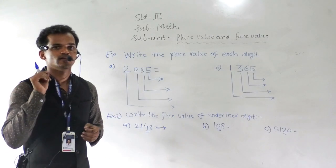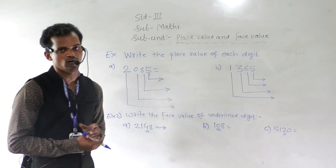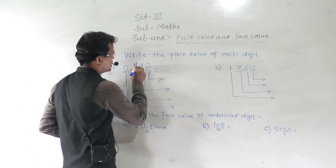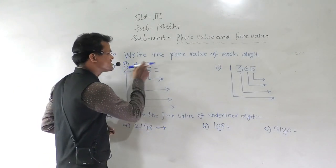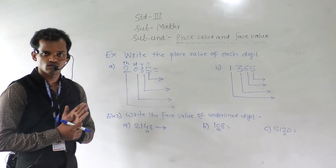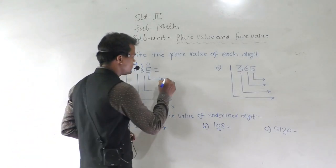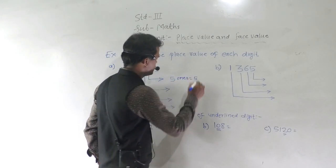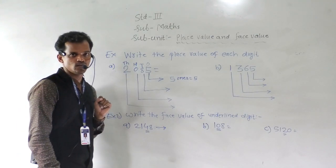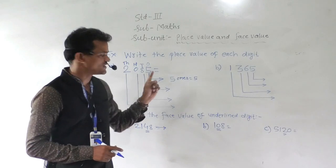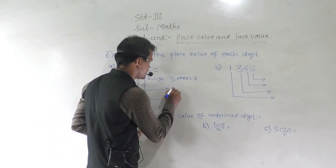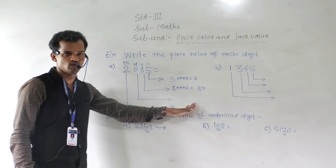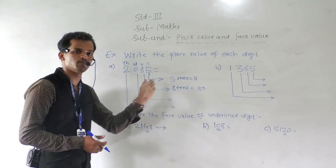We have to write the place value of each digit, starting from the ones place. Which digit comes at the ones place? 5 comes at the ones place, so 5 multiplied by 1 equals 5. Then 8 comes at the tens place: 8 multiplied by 10 equals 80. We also learn that the place value of 0 is always 0 — whenever it comes, its place value is always 0.